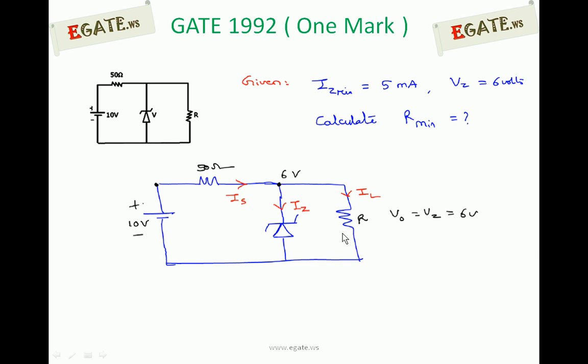From this, Is we can write as Iz plus Il. If you observe here, for Is flowing through 50Ω, the voltage across both ends is constant: 10V and Vz equals 6V. A constant voltage drop across a constant resistance results in constant current, so Is is constant.